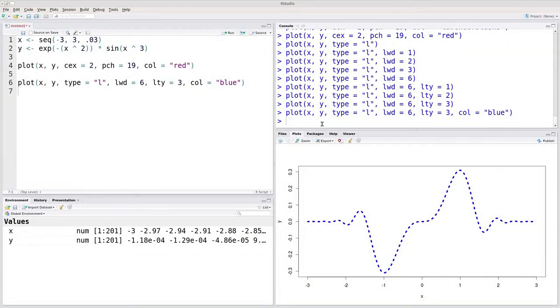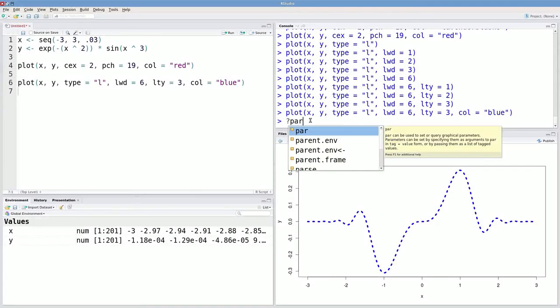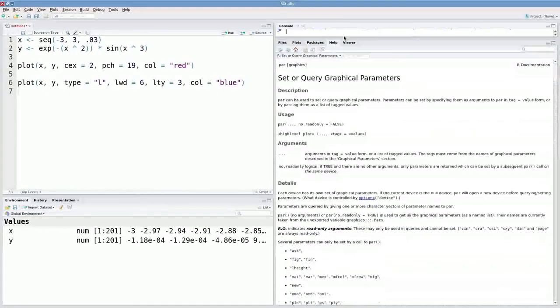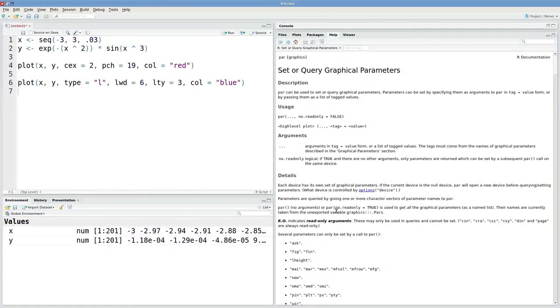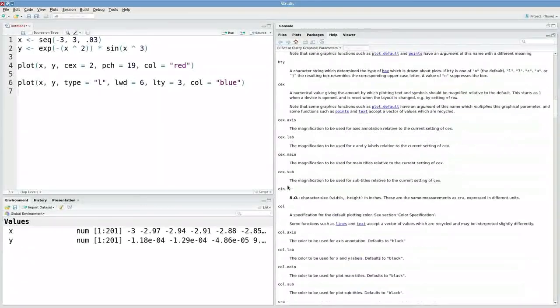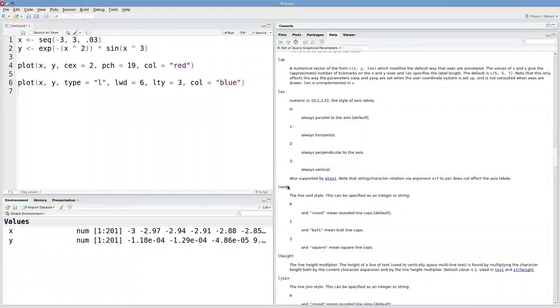These are just a few of the graphical parameters that you can change. To see all of them, you can type in question mark PAR. And this help file has a lot. We've covered a very small number of the parameters that you can choose from. But if you're interested, you can see all of them that are available here.